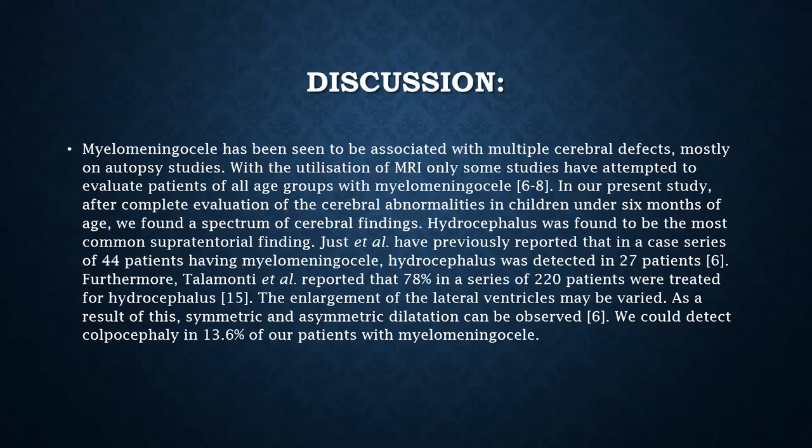Myelomeningocele was seen to be associated with multiple cerebral defects as seen in our study. However, in previous studies it was mostly done based on autopsies. With the utilization of MRI, only some studies have attempted to evaluate patients of all age groups with myelomeningocele. In our present study, after complete evaluation of cerebral abnormalities in children under 6 months of age, we found a spectrum of cerebral findings. Hydrocephalus was the most common finding, as seen in previous studies — Just et al. had reported that in a case series of 44 patients with myelomeningocele, hydrocephalus was detected in 27 patients.